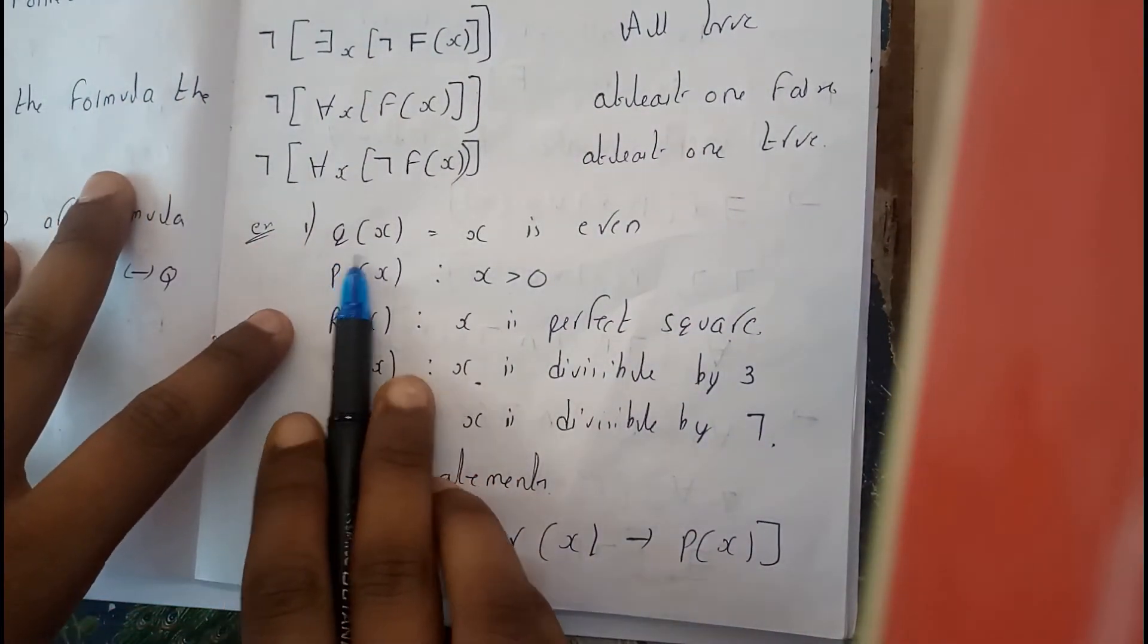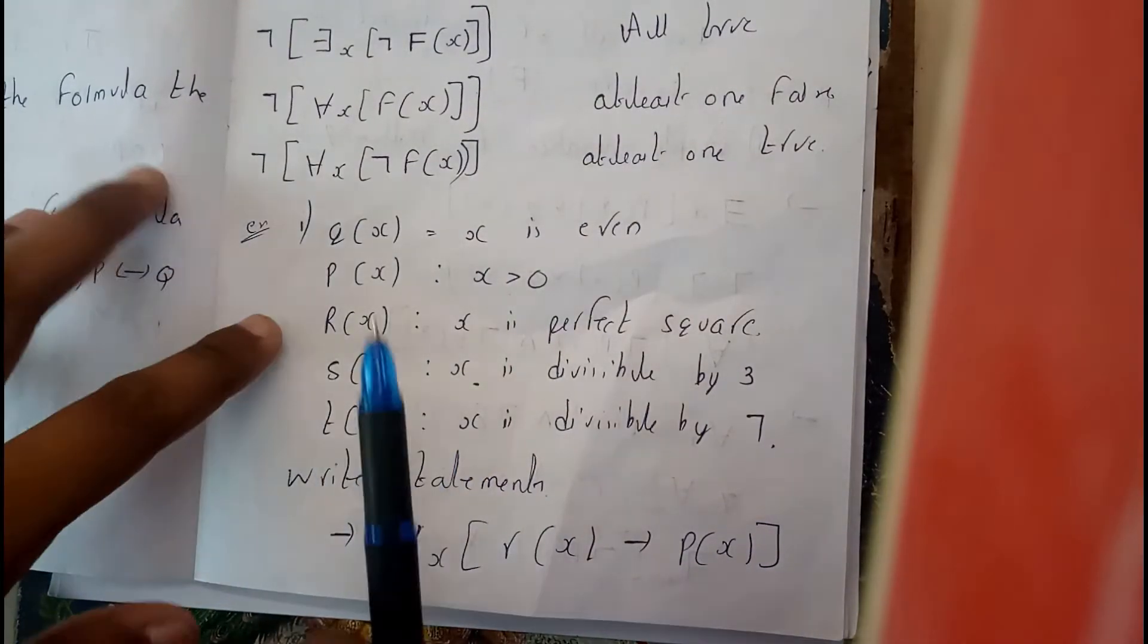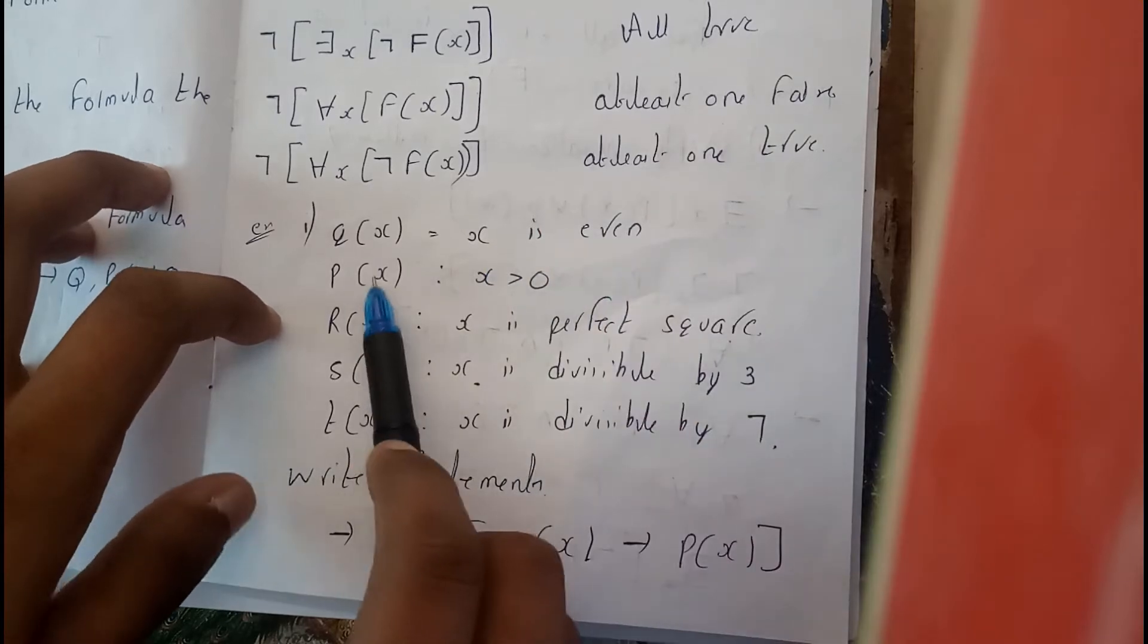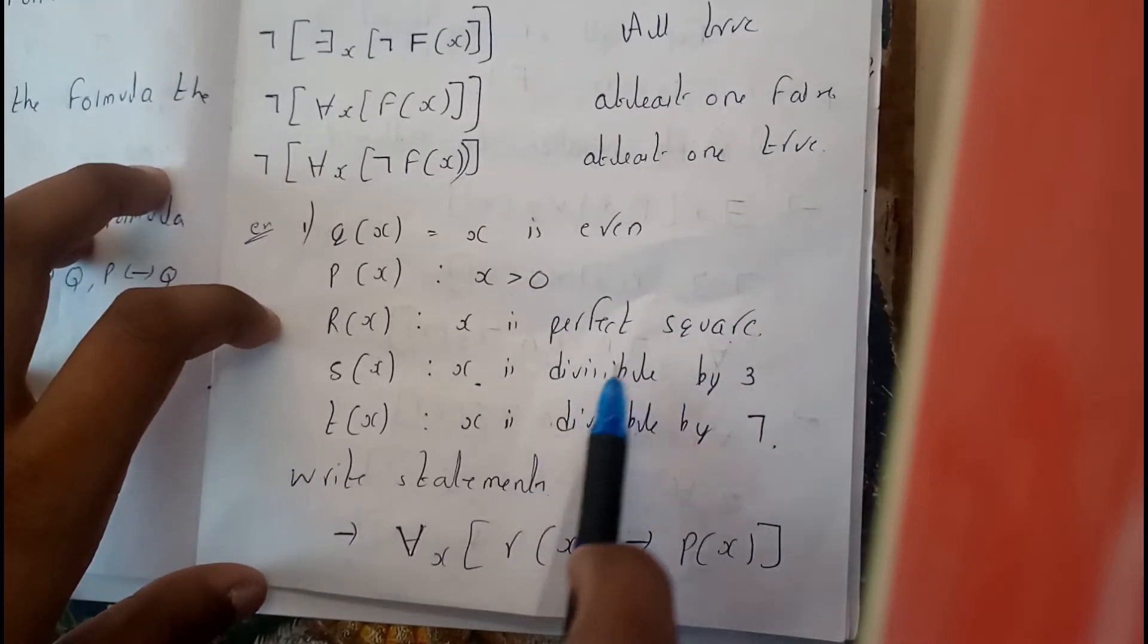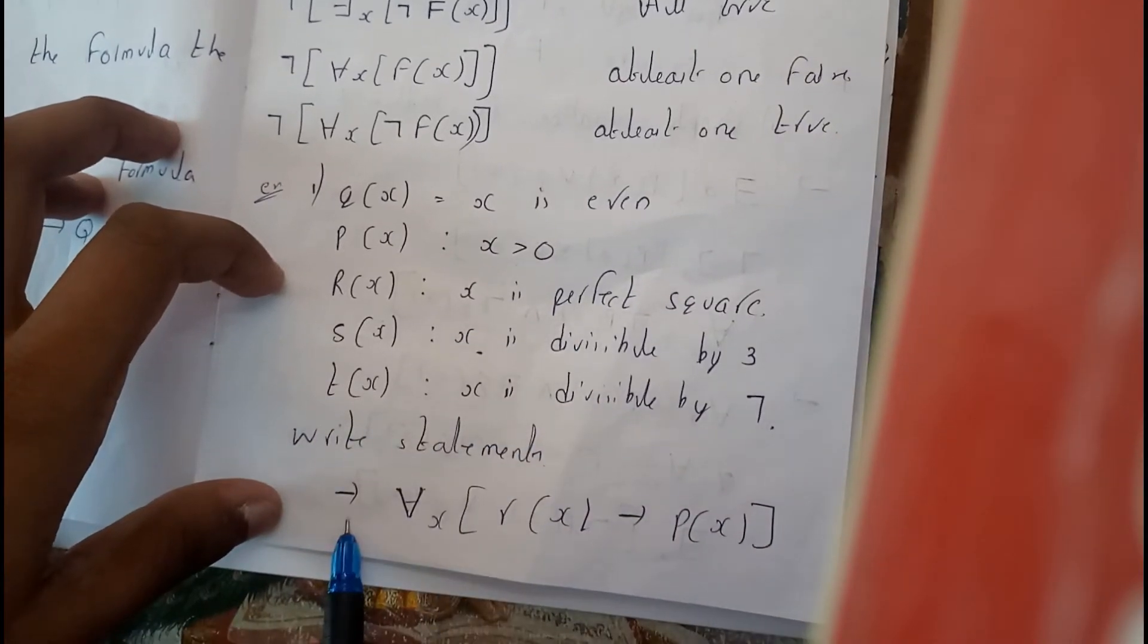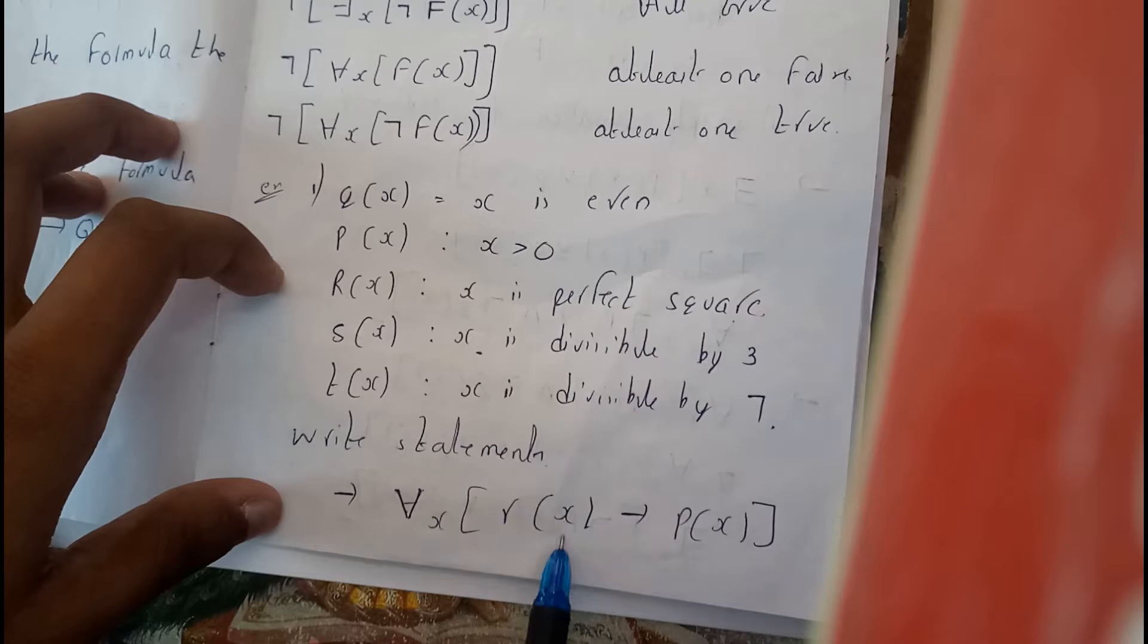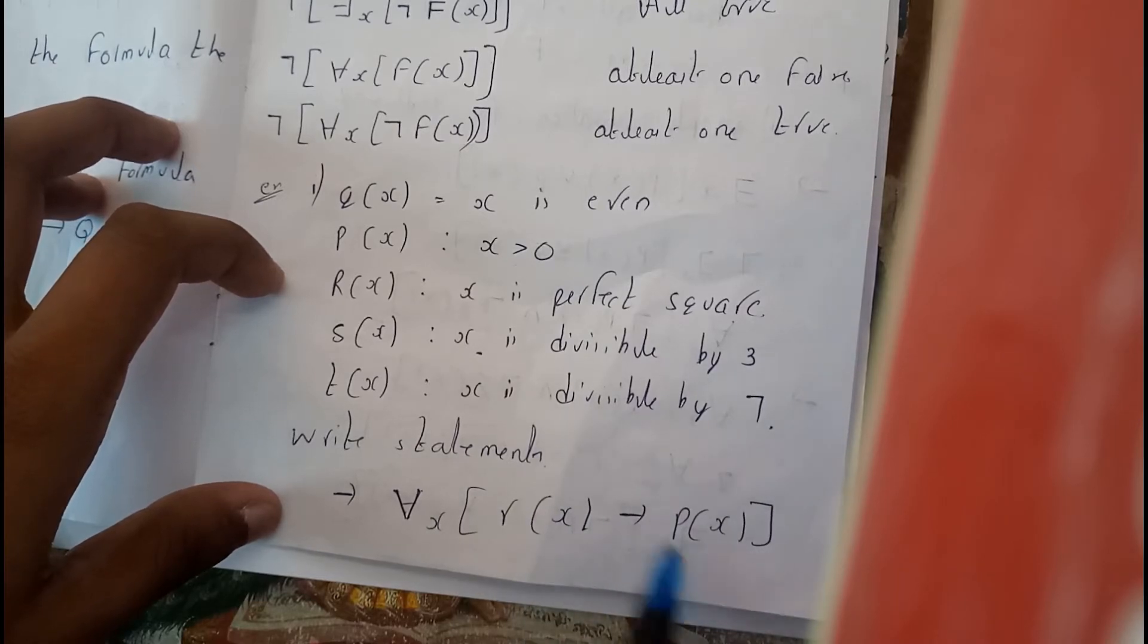Next, take an example. It is really clear. Q of x is x is an even number. X is greater than zero. I think this is the previous example which we have used. The same example. Now we are using for all x, r of x implies p of q. So it is really clear,